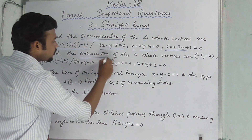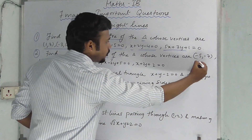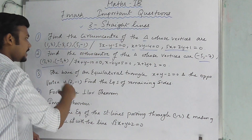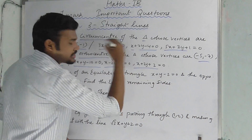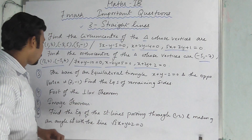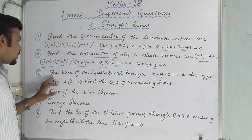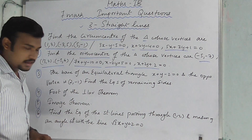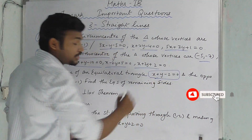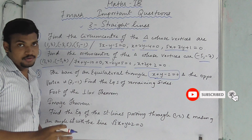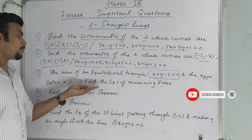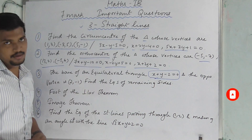Next, find the orthocenter — same approach. This is also a point-center, not the side-center. Next, the base of an equilateral triangle — we are going to choose a different sum, but we are going to choose the opposite vertex and check — find the equations of the remaining sides. That is an important question.